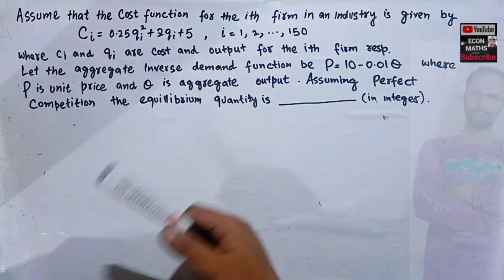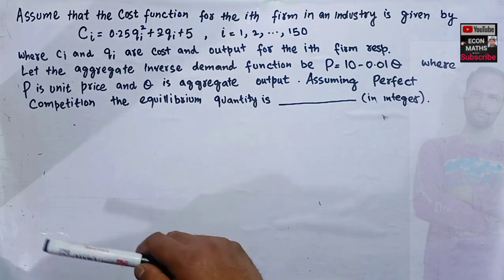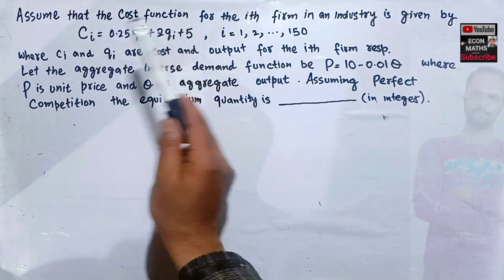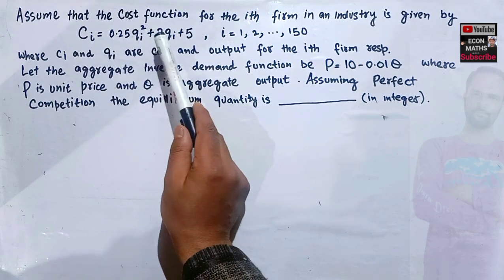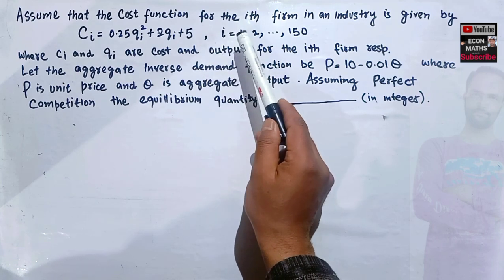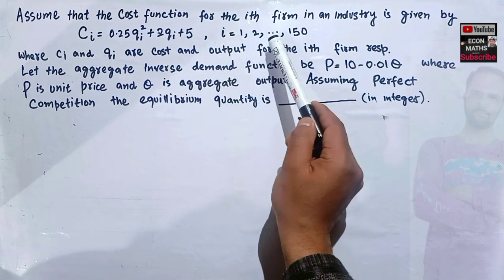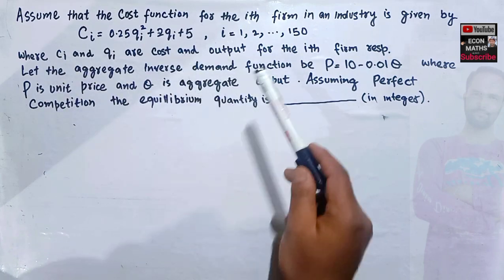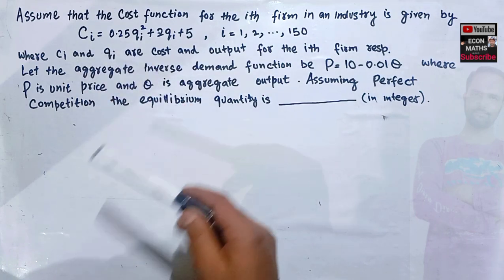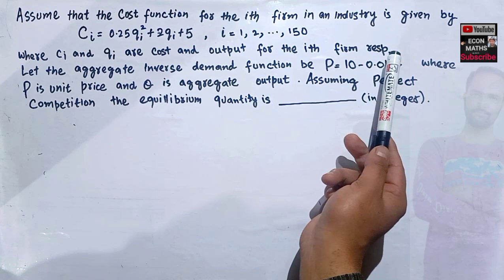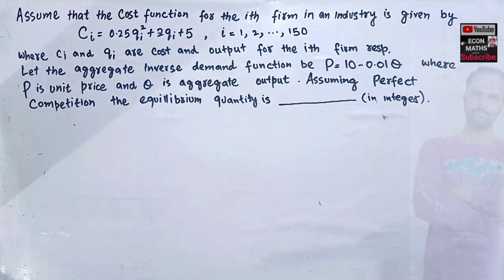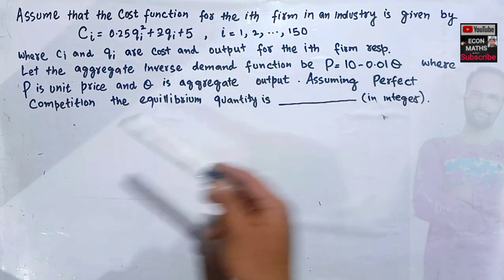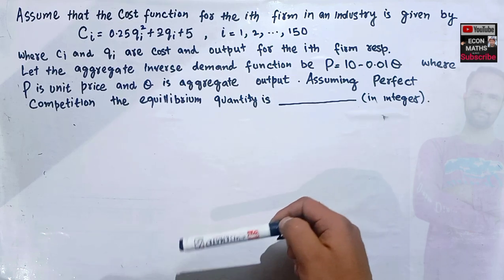Let us solve a question on how to find equilibrium quantity when we are given the cost function and the aggregate demand function. The question: assume the cost function for the i-th firm in an industry is given by C_i = 0.25q_i² + 2q_i + 5, for i = 1, 2, up to 150. That means we have 150 identical firms. The aggregate inverse demand function is P = 10 − 0.01Q, where P is the unit price and Q is the aggregate output. Assuming perfect competition, find the equilibrium quantity.